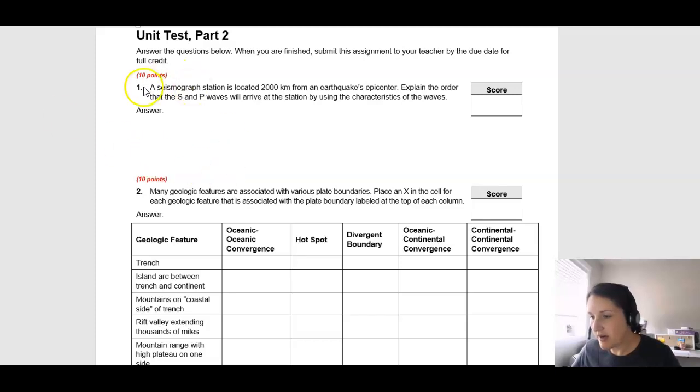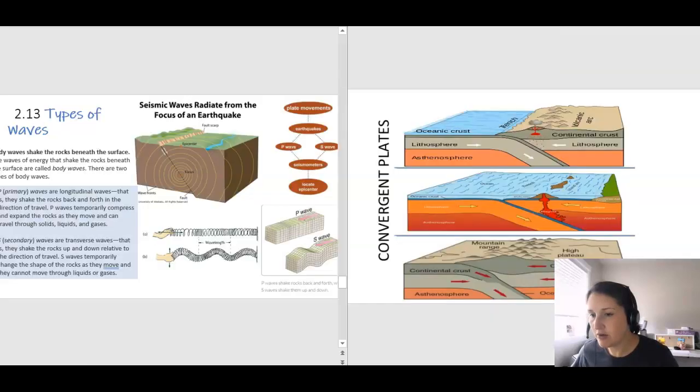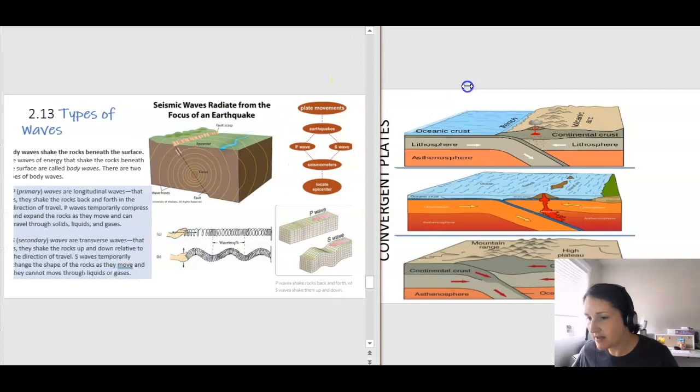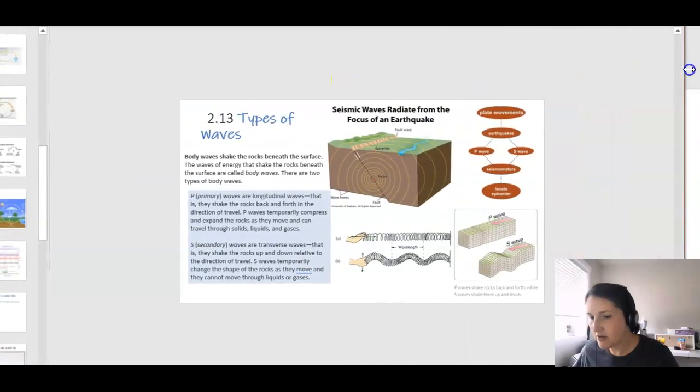Question one says that a seismograph station is located 2,000 kilometers from an earthquake's epicenter. Explain the order that the S and P waves will arrive at the station by using the characteristics of the waves. So first we need to take a peek and look at what those two different waves are. Let me expand this so we can focus in on those waves.